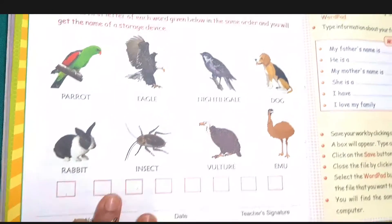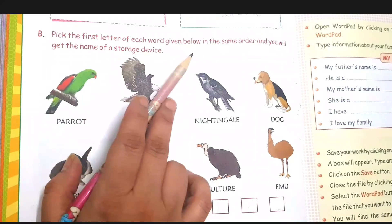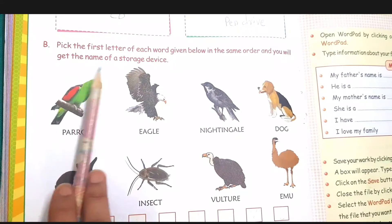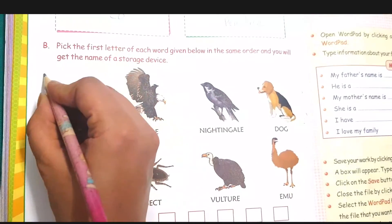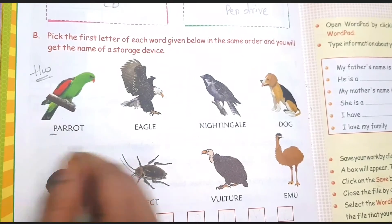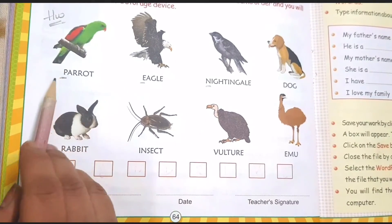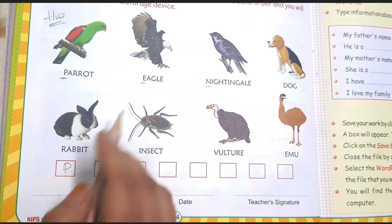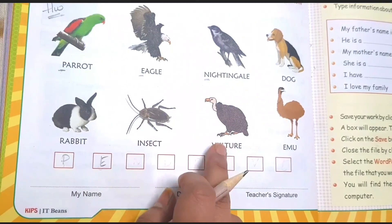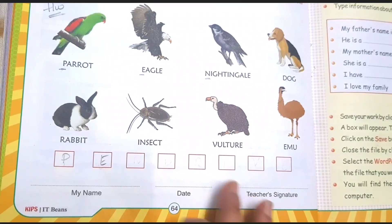Next activity is also very simple. Pick the first letter of each word given below in the same order, and you will get the name of a storage device. For example, this is a parrot — P; this is an eagle — E; this is a nightingale — N. Like that, write the first letter for vulture, emu and rabbit. Write the word you get and post it on the group. Thank you, children.